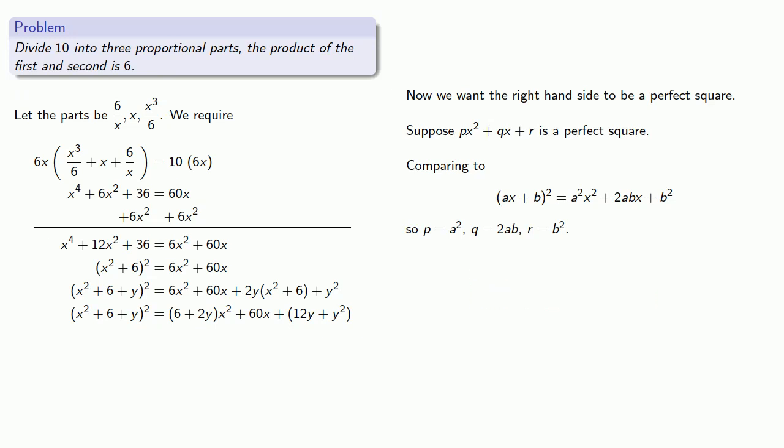We'd like to find a relationship between them. 2ab over 2 squared is a squared b squared. But 2ab is q, so this is really q over 2 squared. Since p equals a squared and r equals b squared, then a squared b squared is pr. We could read this as saying the square of half the coefficient of x must be the product of the other coefficients.